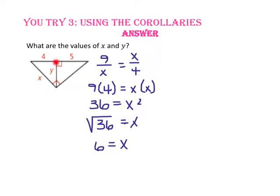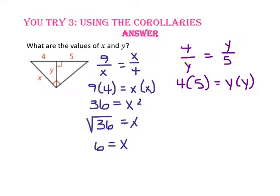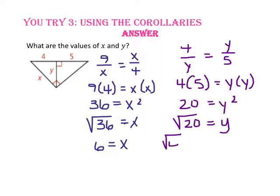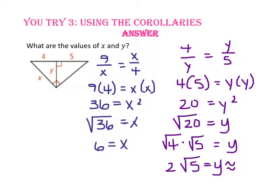Since Y is the altitude, we know it is the geometric mean of the two segments of the hypotenuse, 4 and 5. Using cross products: 4 times 5 equals Y squared, so 20 equals Y squared. Taking the square root of both sides, Y equals the square root of 20, which simplifies to 2 times the square root of 5, or approximately 4.5.